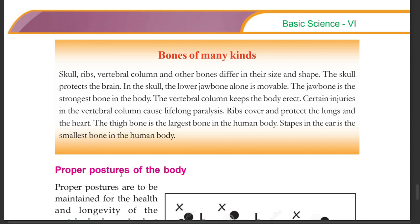Ribs cover and protect the lungs and the heart. The thigh bone is the largest bone in the human body. The stapes in the ear is the smallest bone in the human body.